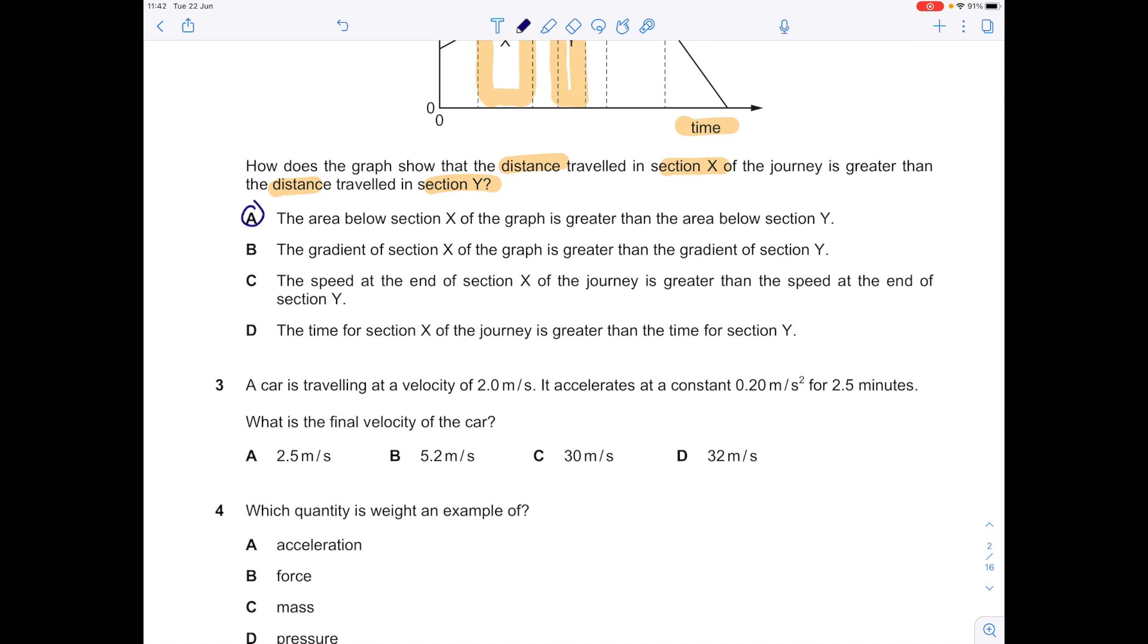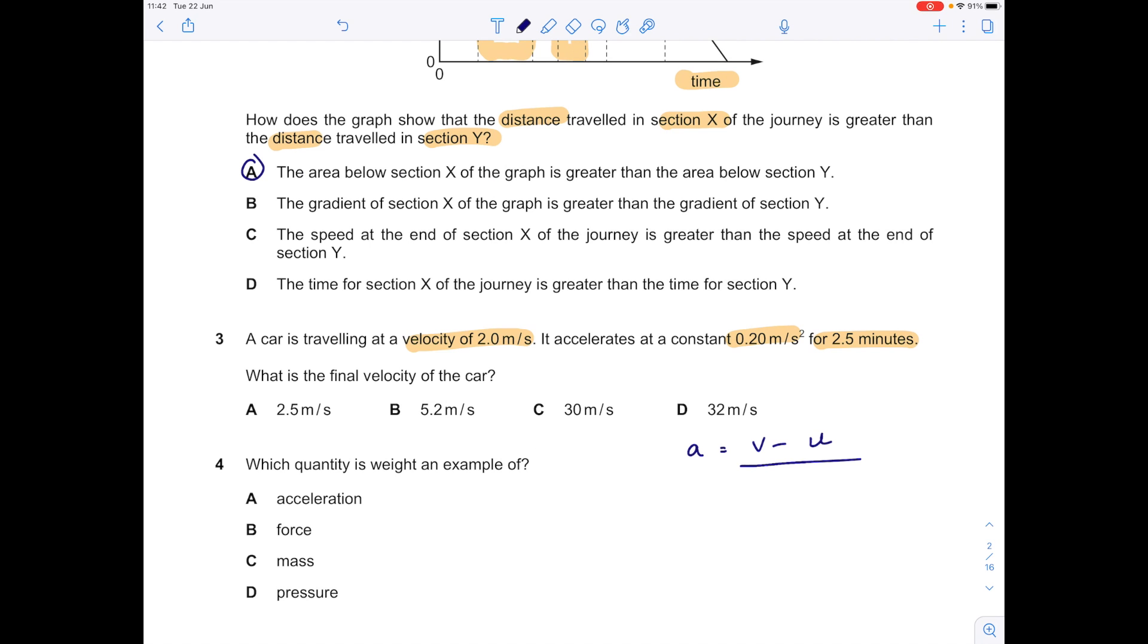A car is traveling at a velocity of 2 meters per second. It accelerates at a constant 0.2 meters per second squared for 2.5 minutes. What is the final velocity of the car? Remember that acceleration is final speed minus initial speed over time. We know the acceleration is 0.2. We're looking for the final velocity V. The initial velocity was 2 and our time is 2.5 minutes. Be careful with your units. You need that minutes in seconds, so we're going to multiply that by 60. So to sort this equation out, do 2.5 times 60 and then multiply it by 0.2 to get 30 equals V minus 2. To get V by itself, you want to add 2 to both sides. So your final answer here is 32 meters per second, which is option D.